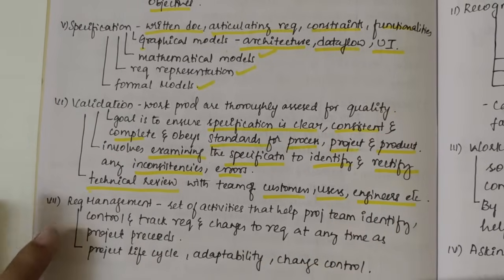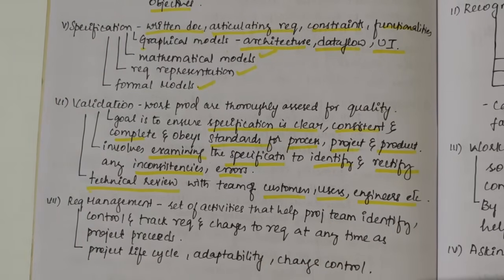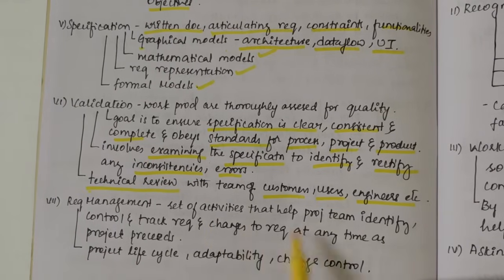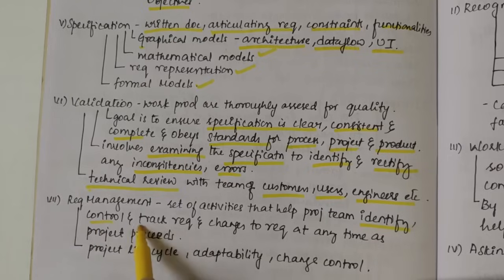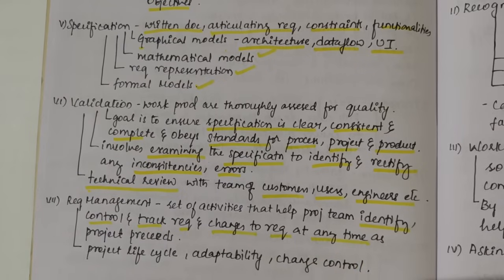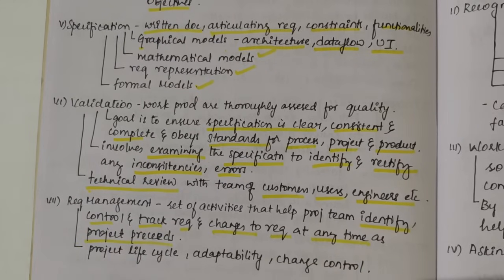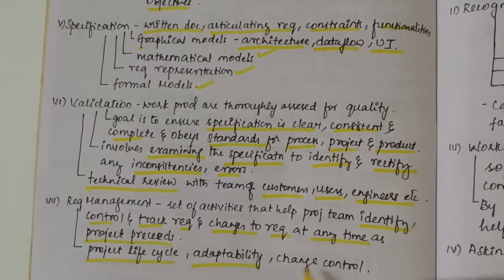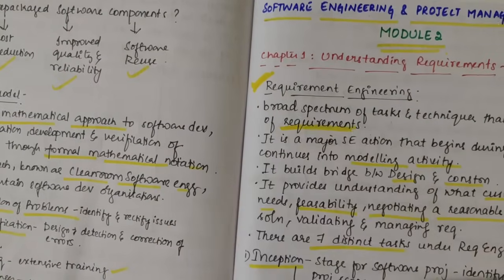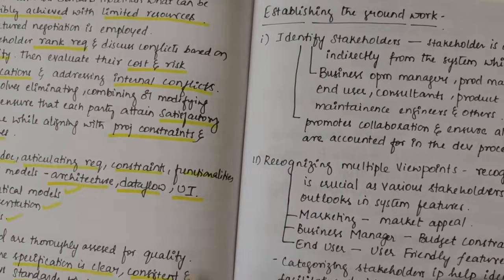The last task is Requirement Management. Once all requirements are obtained and everything is in order, we must manage them. It is a set of activities that help the project team identify, control, track requirements, and change them at any time as the project proceeds. We make use of the project life cycle here; adaptability and change control are features of requirement management. This question on requirement engineering with its seven tasks is pretty important — make sure you study them properly.